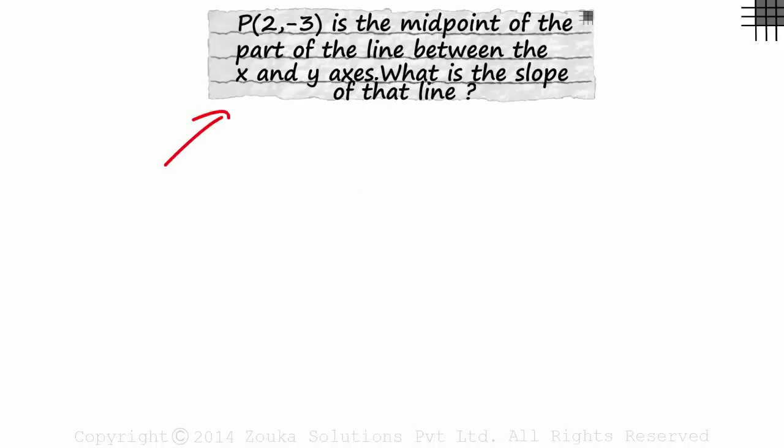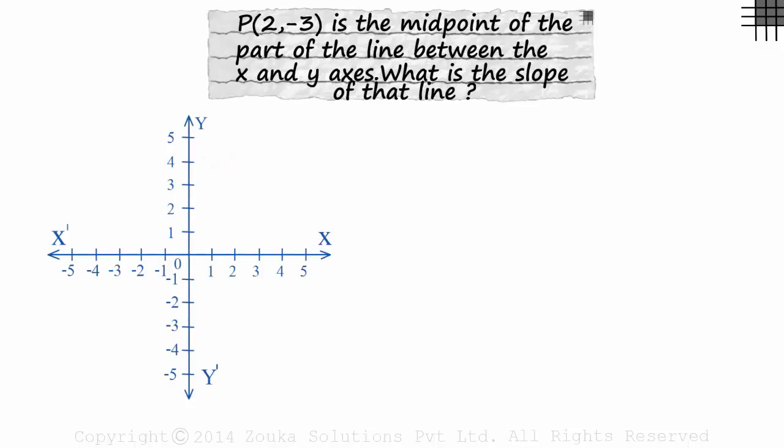Let's try understanding this with the help of a coordinate plane. The only thing we are given is that 2 comma minus 3 is the midpoint of some line segment. This is tricky. Read the question carefully. It is the midpoint of the part of the line between the x and the y axis. Now try drawing different lines passing through P.